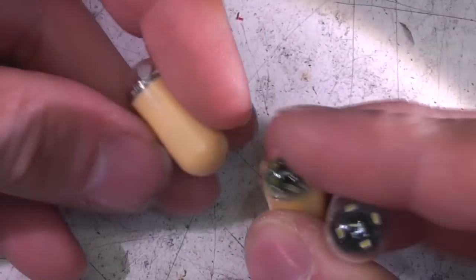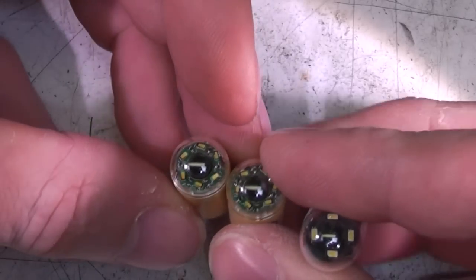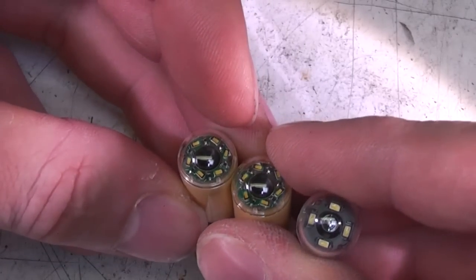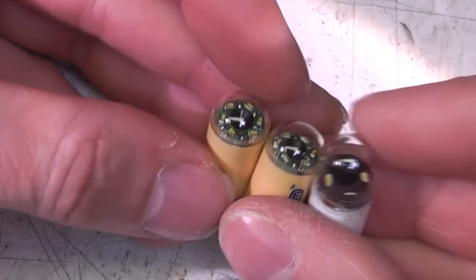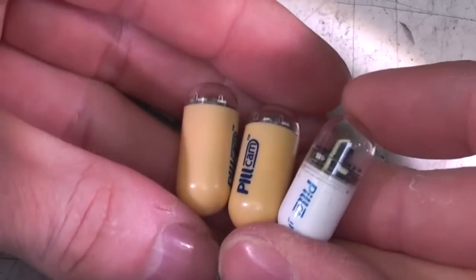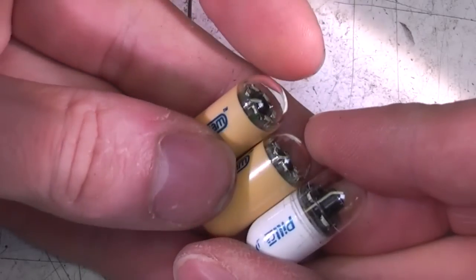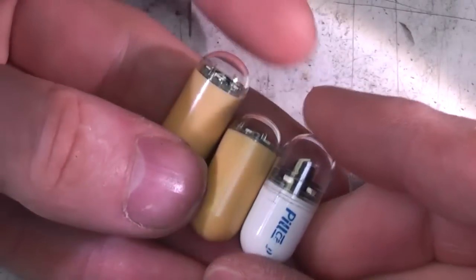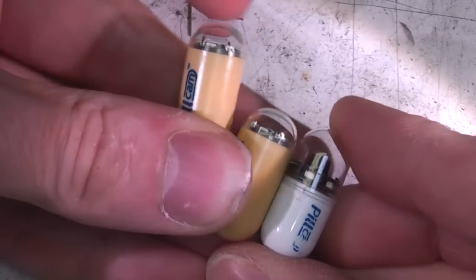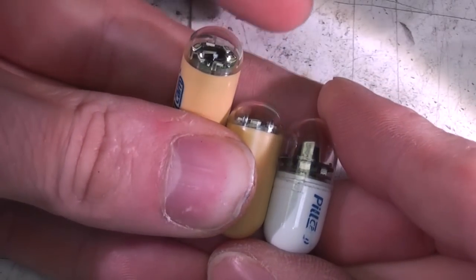Subsequent to my last pill cam teardown, courtesy of a gastroenterologist who prefers to remain anonymous, I've got hold of a few more pill cameras. These are the radio type made by a company called Given in Israel. There's two types here. I don't know whether these are actually different functional types or just different generations.